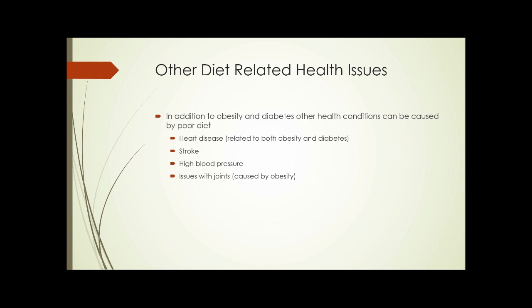Other diet and health-related issues: in addition to obesity and diabetes, other health conditions can be caused by poor diet — heart disease, which is related to both obesity and diabetes; stroke; and high blood pressure.